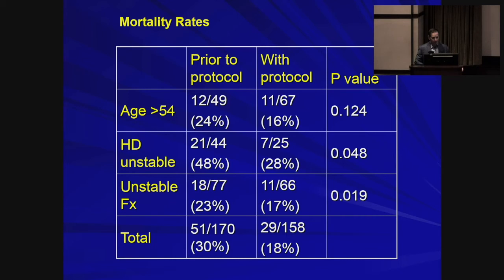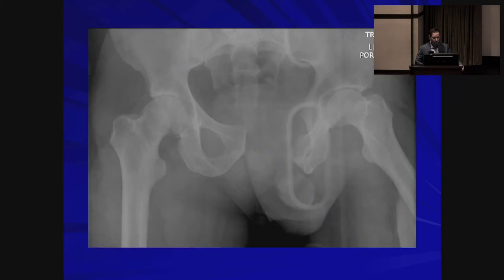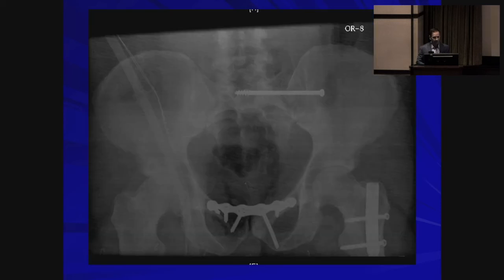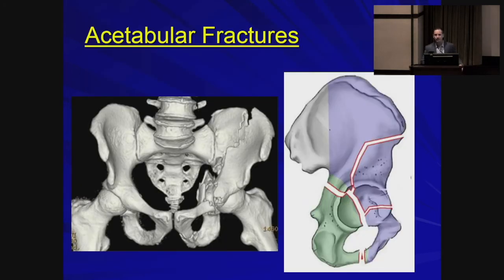Case: 44-year-old male pedestrian struck, high-energy injury, arrives in shock with obvious pelvic deformity and a left femoral shaft fracture. AP pelvis shows an APC3. A closed reduction was performed, a sheet was applied, and the patient responded to fluids and blood with improved systolic blood pressure. He was admitted to the ICU overnight, brought to the OR the next day, the sheet was removed, the front of the pelvis was plated closing the symphysis, and an SI screw was placed. Vertical height was restored.